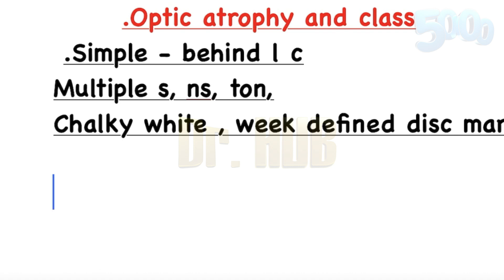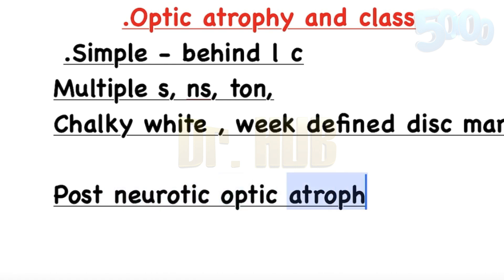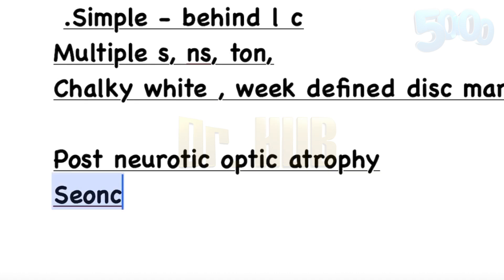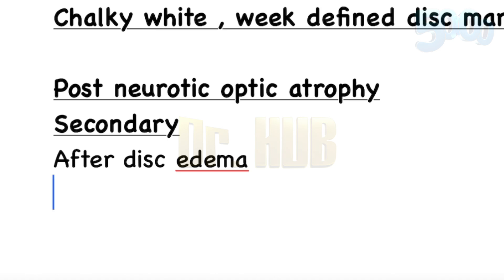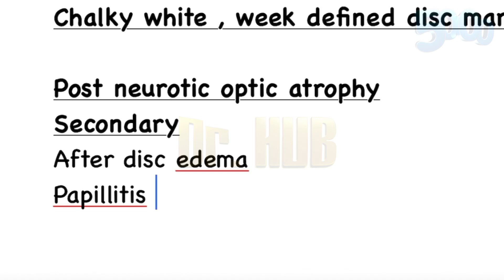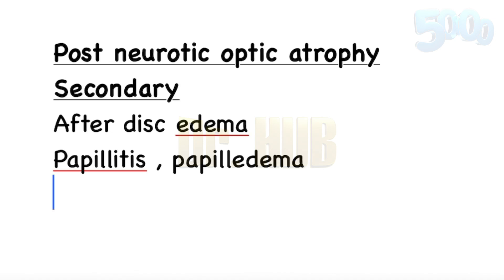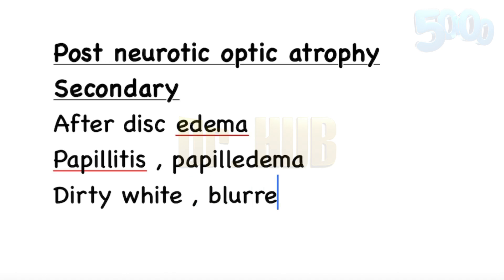Next we move on to post-neurotic optic atrophy, which is nothing but secondary optic atrophy. This occurs after disc edema and causes papillitis as well as papilledema. The disc appears dirty white — compared to the chalky white in primary — and the disc margin is blurred.